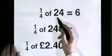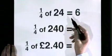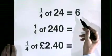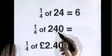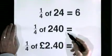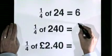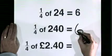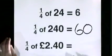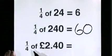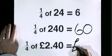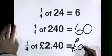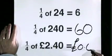A quarter of 24 is 6. A quarter of 240 is 60. A quarter of 2 pounds 40 is no pounds 60.